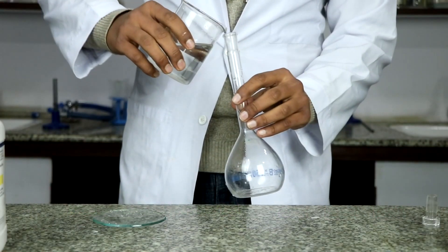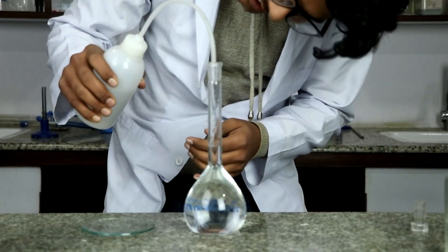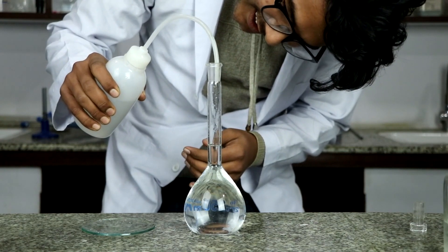Transfer this acid to 250 ml volumetric flask and then add a little distilled water, shake it, and finally add distilled water up to the mark to produce 0.1 normal oxalic acid.